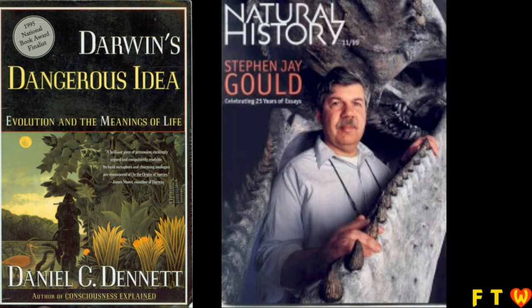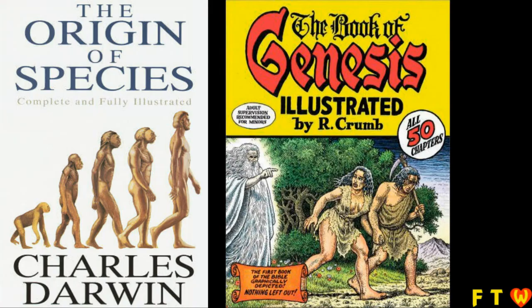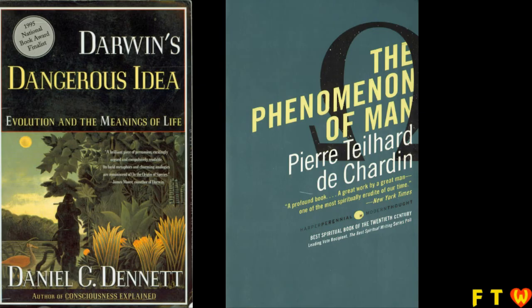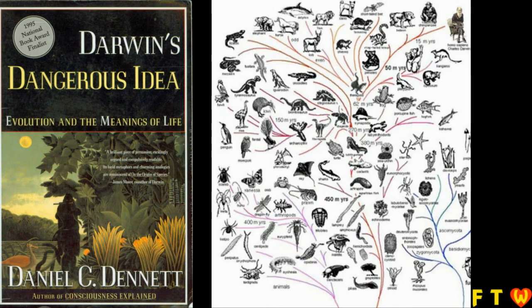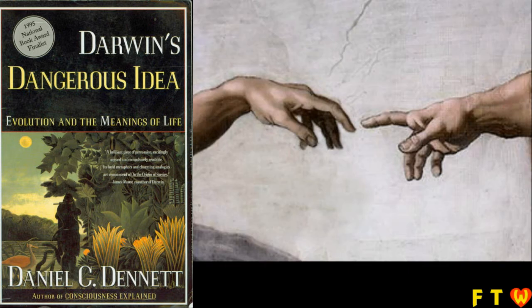Dennett disagrees with Stephen Jay Gould that religion and science are compatible, and he criticizes Gould for looking for skyhooks. If Dennett is right, the conflict between religion and science goes deeper than the origin of species versus a literal interpretation of Genesis. There are many people who accept evolution but still maintain that God had a hand in it at some point. According to Dennett, natural selection is such a thorough explanation for things that there is never any need to suppose that a supernatural creator ever had a hand in making things.